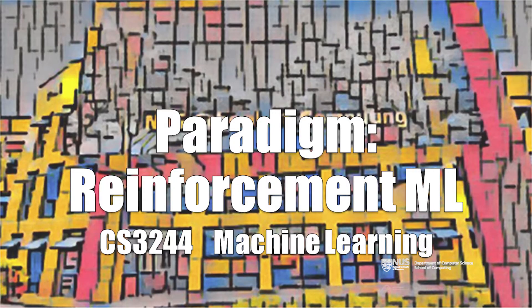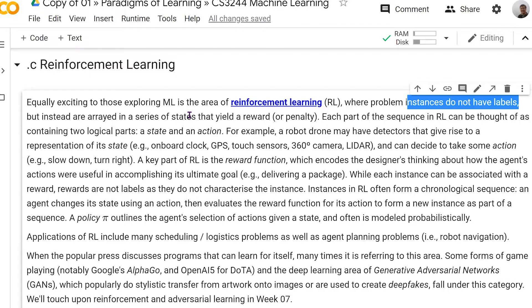So for reinforcement learning, it's our last type, and this is an area that a lot of people are going into now, which is being able to reinforce what things are going on. This is also something that you see in the real world. Basically, in reinforcement learning, it means you don't have labels, just like in unsupervised learning.